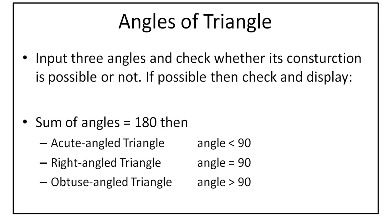So if you make a triangle, the angles when you add them together become 180 degrees. So if it is 180 degrees, then the construction is possible. If it is possible, then you have to check whether the triangle is an acute angle triangle, right angle triangle, or obtuse angle triangle. For an acute angle triangle, if all the angles are lesser than 90, then it is an acute angle triangle.